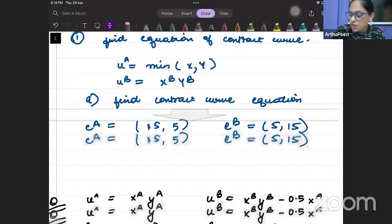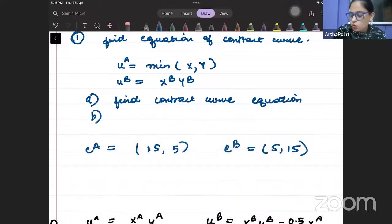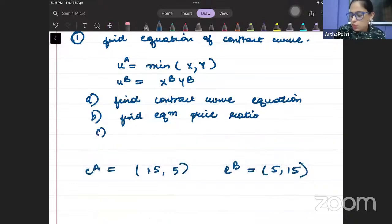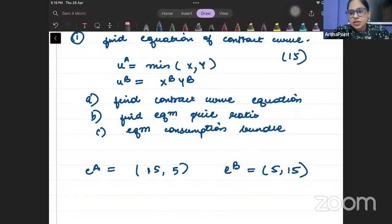So if you are given any such question, you need to go ahead and find the contract curve. This is part 1 question. And then you will be asked to go ahead and find equilibrium price ratio. And then you will be asked to find equilibrium consumption bundle. And this question will come for 15 marks. I will give you three parts. So you need to go ahead and you need to do a question like this.